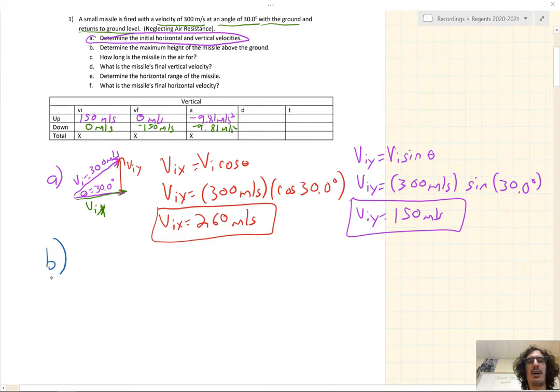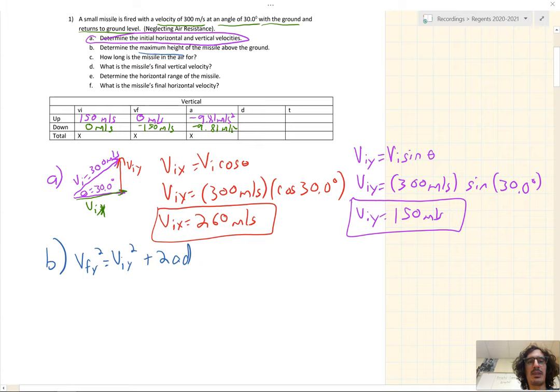Now that we have our knowns filled out in the chart, we can answer the rest of the questions. Letter B asks us how high does it go, or the maximum height. That's in the vertical direction. When it goes up vertically, we know VI, VF, A, and we're finding D. The formula we'll use for that is VFY squared equals VIY squared plus 2AD. At the top, VF is 0, so that goes away.